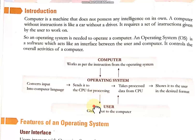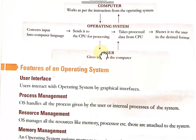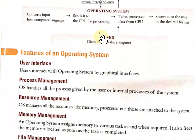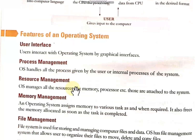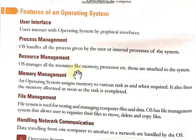Now let's look at the features of an operating system. The first feature is user interface, second is process management, third is resource management, fourth is memory management, fifth is file management, and also handling network communication. Let's talk about each one of them briefly.